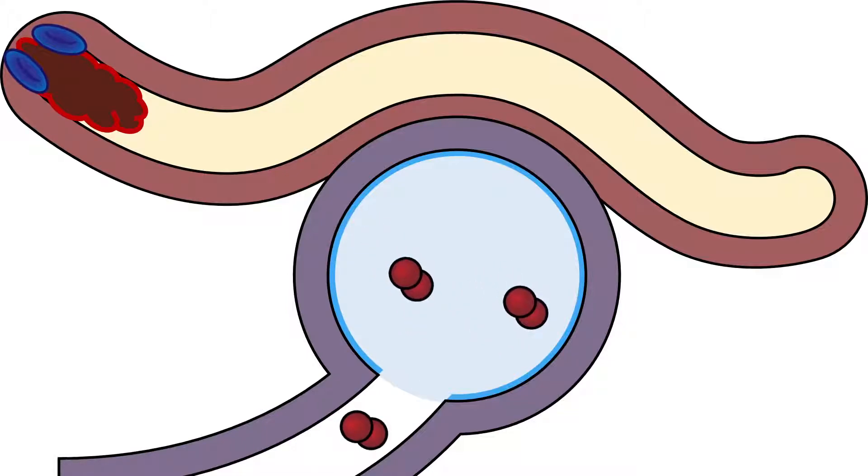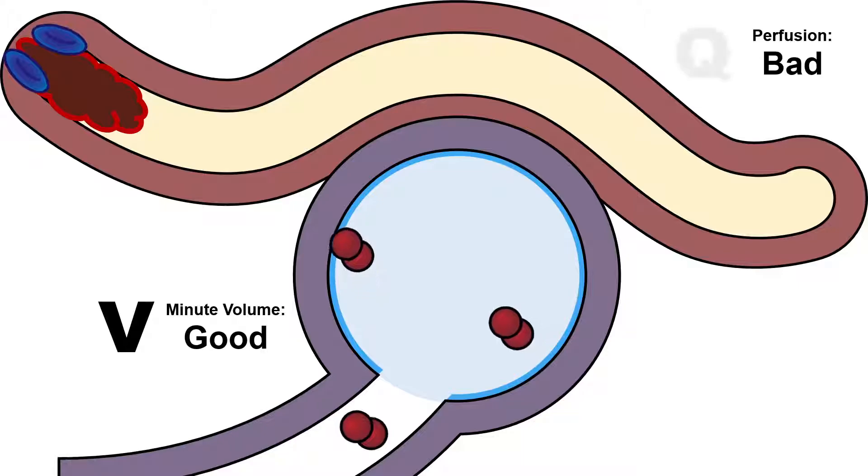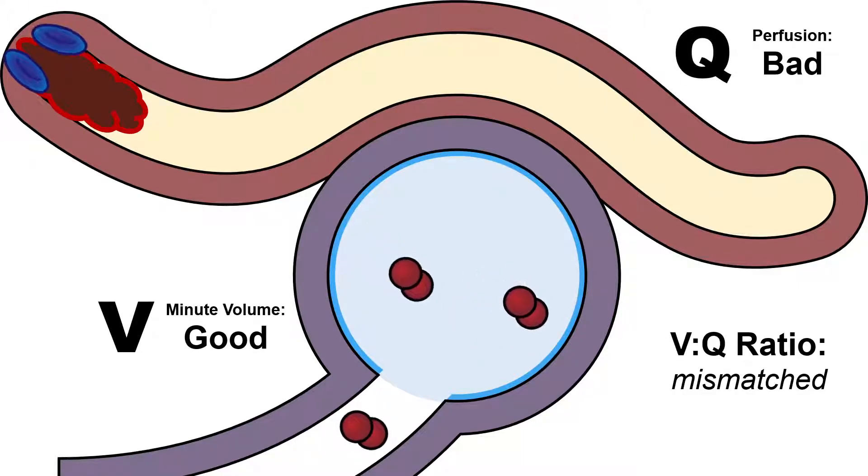It doesn't matter how much we ventilate this patient. The air can get in just fine. It's the lack of perfusion that's the problem. So we'd say that the minute volume is just fine, but the perfusion is bad, and therefore the V/Q is mismatched.